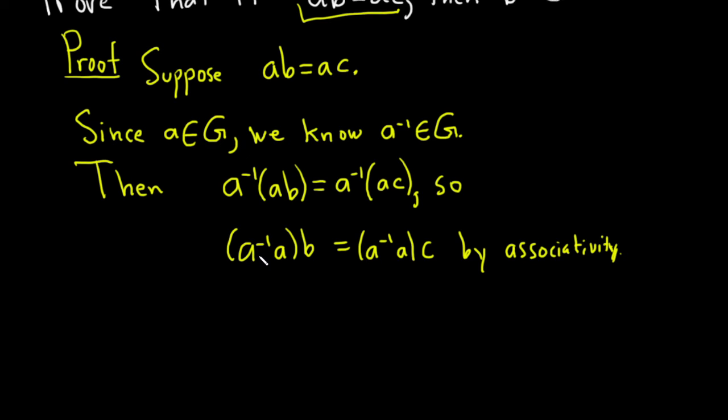In the next line, we can realize that this is equal to the identity, right? A inverse times a is the identity. So this is equal to e times b equals e times c. And this is because a inverse is the inverse of a.